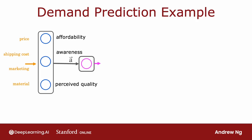Recall the demand prediction example from last week where given price, shipping cost, marketing material, you would try to predict if something is highly affordable, if there's good awareness and high perceived quality, and based on that, try to predict if it's a top seller. But this assumes that awareness is maybe binary, it's either people are aware or they are not. But it seems like the degree to which possible buyers are aware of the t-shirt you're selling may not be binary. They can be a little bit aware, somewhat aware, extremely aware, or it could have gone completely viral.